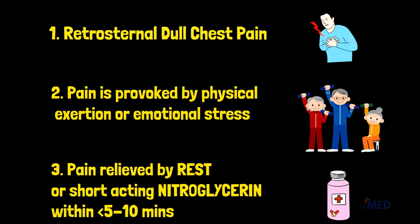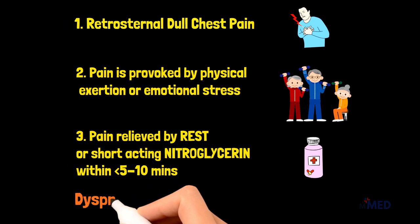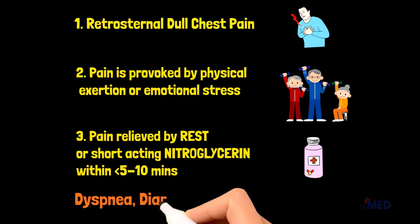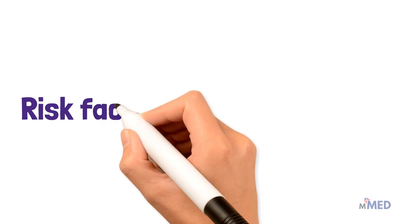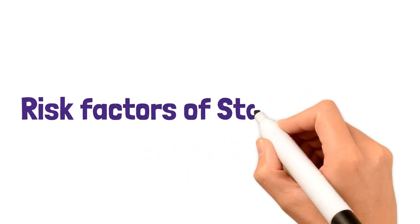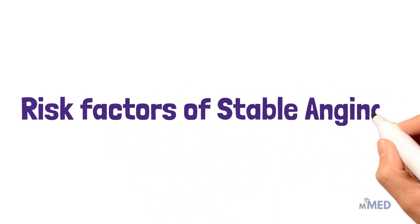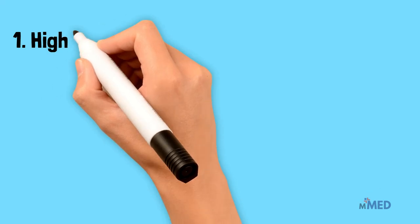If all three of the above symptoms are present it is definitely angina, but if only one is present it is highly likely to be non-cardiac chest pain. Other symptoms of stable angina can include dyspnea, which is shortness of breath, and diaphoresis, which is sweating.